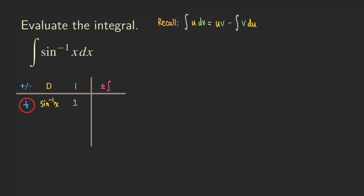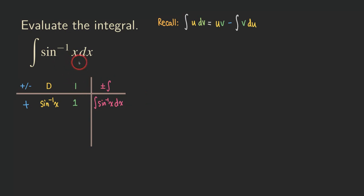If you pretend that the plus is a positive one, then one times sine inverse of X times one together — we are getting the integral of sine inverse of X dx. That's exactly the original integral. So once you set up everything in this column, it will be a good idea to multiply everything together and put it inside the integral to see if we're actually getting the original integral.